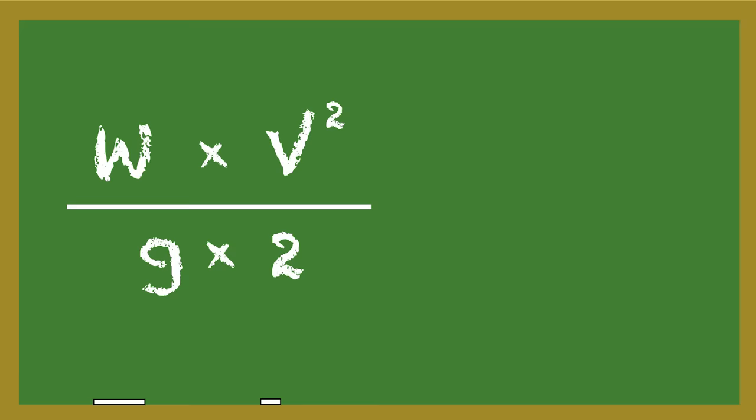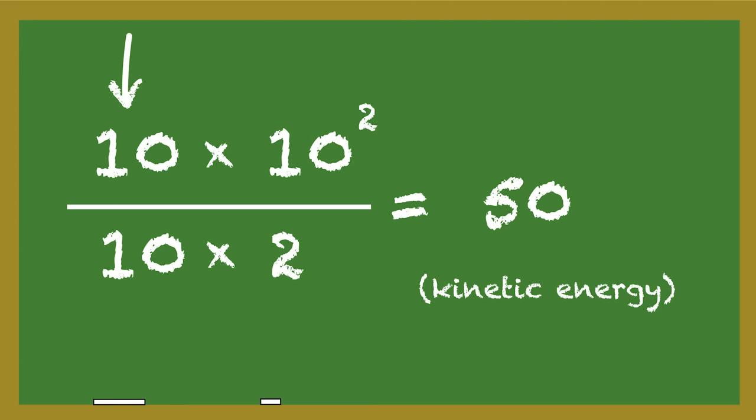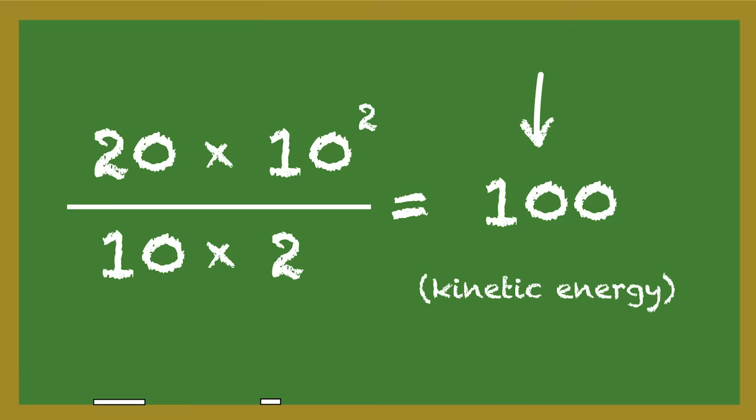So let's make everything a value of 10. The weight is 10, the velocity is 10, and the gravitational constant is also 10. We run the equation, and the kinetic energy is 50. Great. When we double the weight of the bullet, the kinetic energy also doubles to 100. Now, if we double the velocity, the kinetic energy does not double, it quadruples.